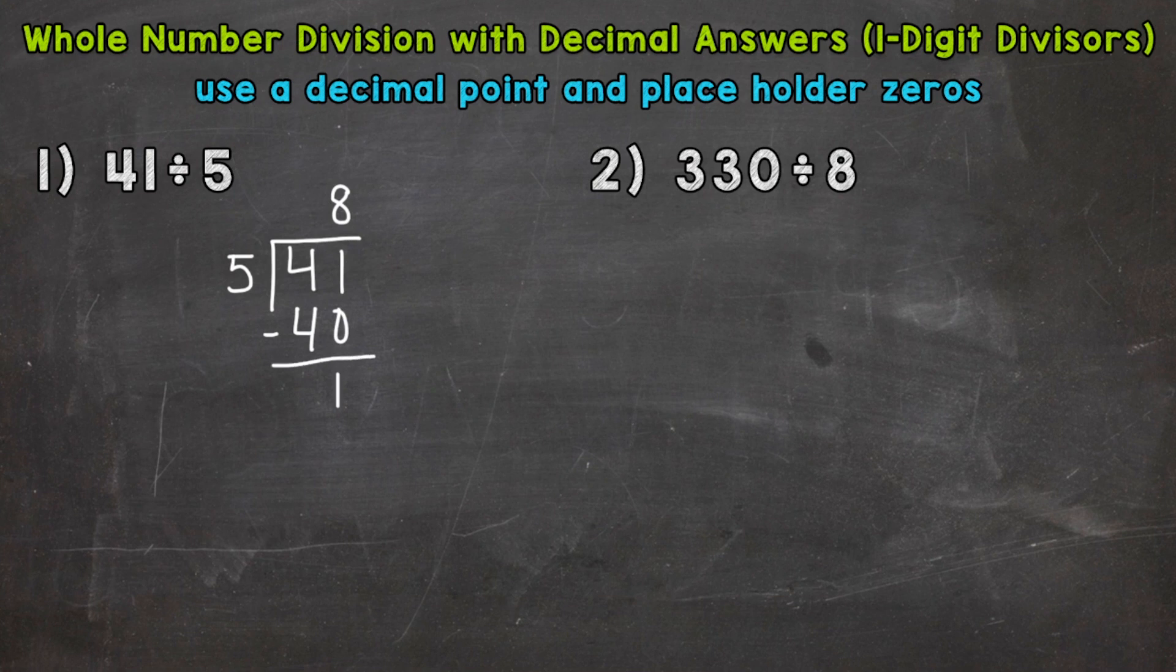So 8 remainder 1 would be the correct answer, but we want this in decimal form. So what we're going to do, we're going to use a decimal point, place it after the 41, and then bring that straight up into your answer. And we're going to use a placeholder zero to the right of that decimal point. That way we have something to bring down and continue our division process.